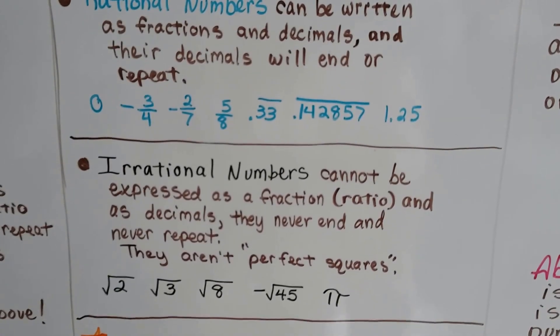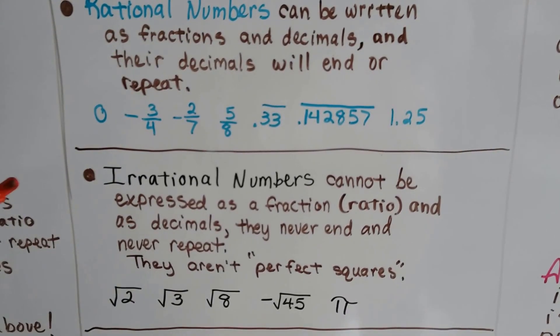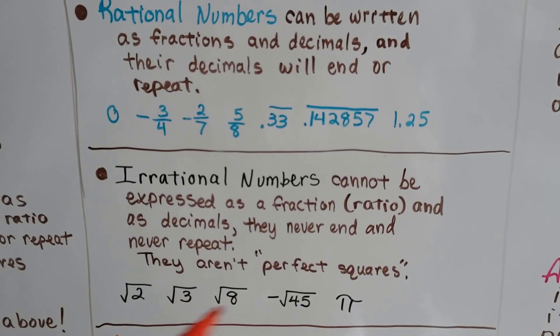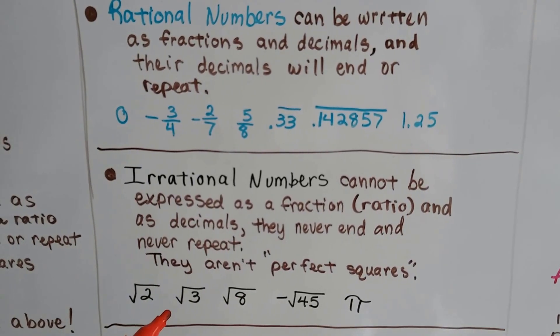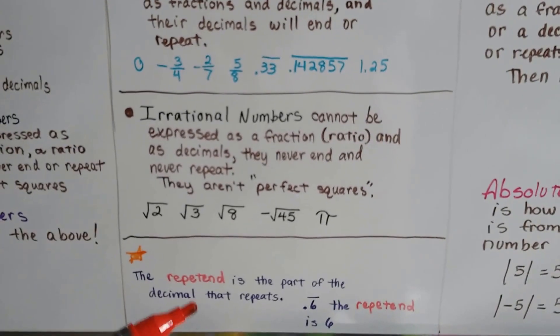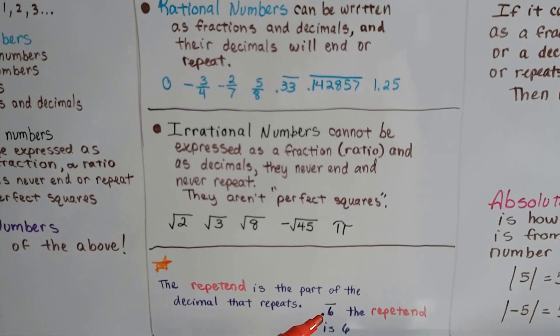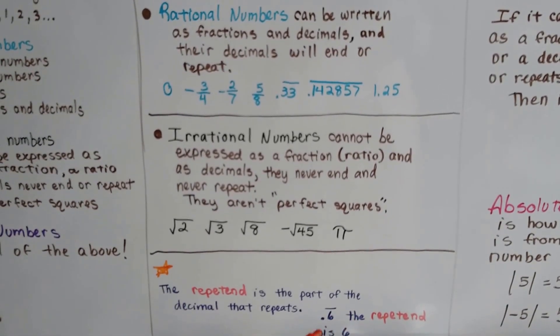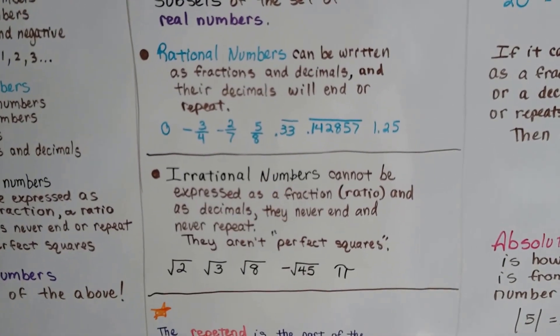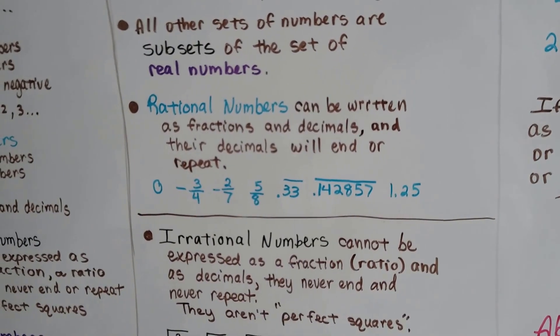But irrational numbers can't be written as fractions, and as decimals they'll never end and never repeat, and they are not perfect squares. Here are some examples of irrational numbers. A new word for you is the repetend—it's the part of the decimal that repeats. For 2/3, 0.6666, the repetend is the 6. For 1/7, the repetend is 142857.